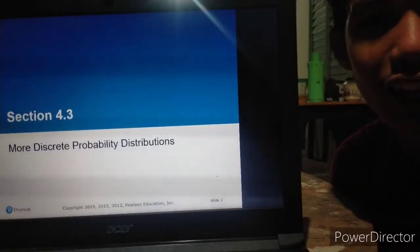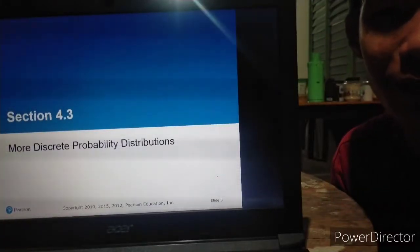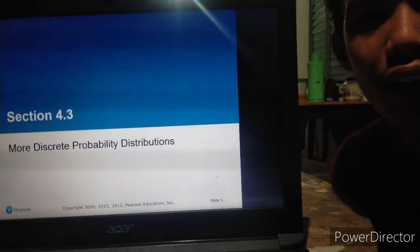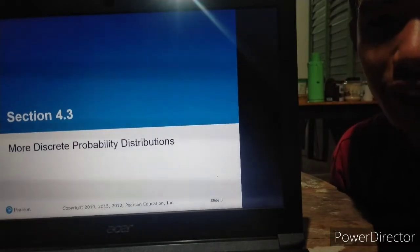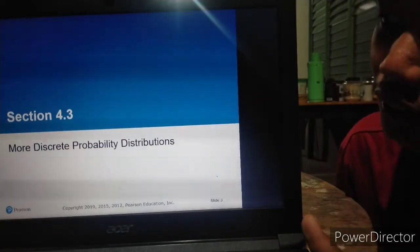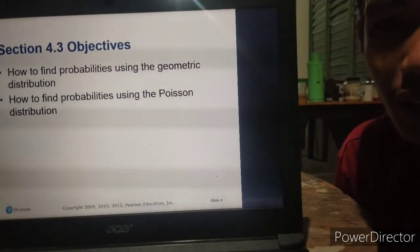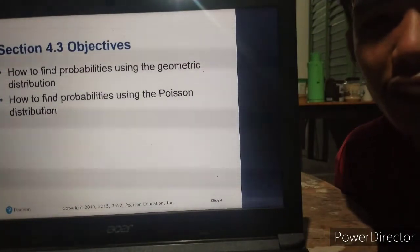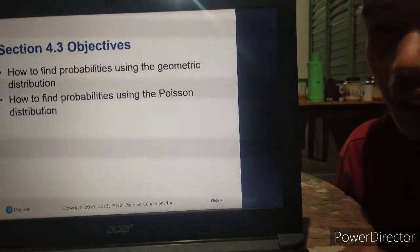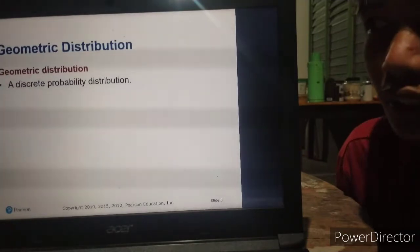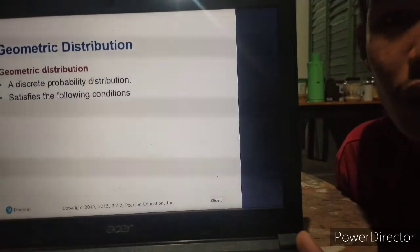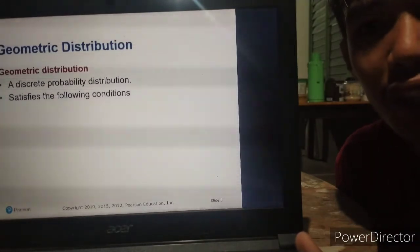Hello guys, I'm Joshua Dominic de la Cruz from BS Mathematics. In this video, I'll be discussing more discrete probability distributions. In this lesson, you'll know how to find probabilities using geometric and Poisson distribution. First, we have geometric distribution. It is a discrete probability distribution. Recalling from past lessons, discrete means can only take a certain value.